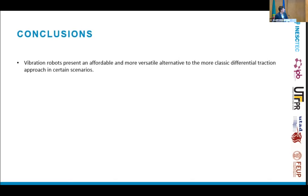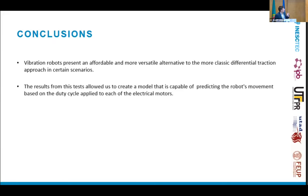Vibration robots present an affordable and more versatile alternative than other types of robots for small works, and there's very little research on them. The results of these tests allowed us to predict the movement of the robot, both in angular velocity and linear velocity, and feed it to different simulators in order to actually simulate the robot and simulate an entire swarm of robots.